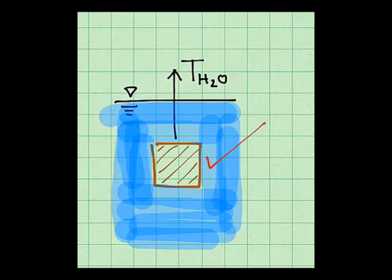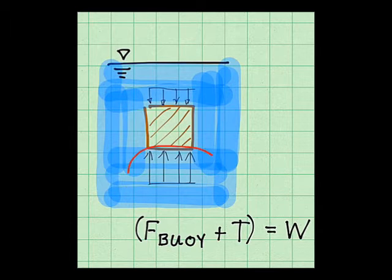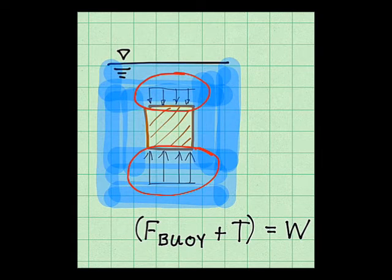Consider a block in water. Here, the tension force is the force required to hold this block up to hold this stationary. And we know that pressure increases in the water as we go down in depth. Thus, the pressure stress on the bottom of the block is greater than the pressure stress on the top of the block. Thus, there's a net force which is tending to act upward, and this is the buoyant force.